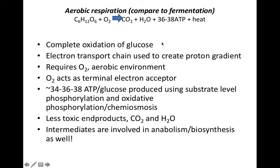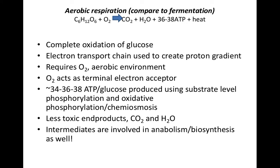Key features of aerobic respiration: it's the complete oxidation of glucose; an electron transport chain creates a proton gradient; it requires oxygen as the terminal electron acceptor. The revised estimate of ATP production is 34 ATP per glucose; older estimates were 36–38. This ATP is produced by a combination of substrate-level phosphorylation and oxidative phosphorylation. Oxidative phosphorylation uses redox reactions of the electron transport chain to form a proton gradient, which drives phosphorylation of ADP to ATP by ATP synthase — an example of chemiosmosis. End products CO2 and water are less toxic than the acids and alcohols of fermentation.